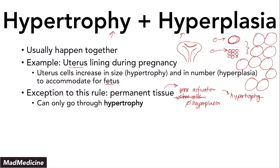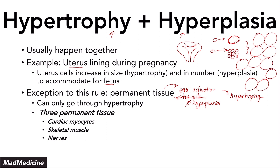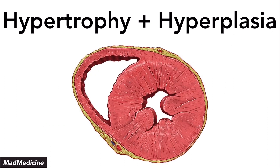There are three main types of permanent tissue you need to remember: your cardiac myocytes, your skeletal muscle, and your nerves. Permanent tissue obviously cannot regenerate, and why? Because there are no stem cells. One quintessential example of hypertrophy is hypertrophic cardiac hypertrophy — especially when talking about the heart during a hypertensive pathway. The heart is going to hypertrophy so it can actually pump out the blood. When the cardiac myocytes grow, they are going through hypertrophy and not hyperplasia because you're not getting more myocytes — you're just having larger myocytes.